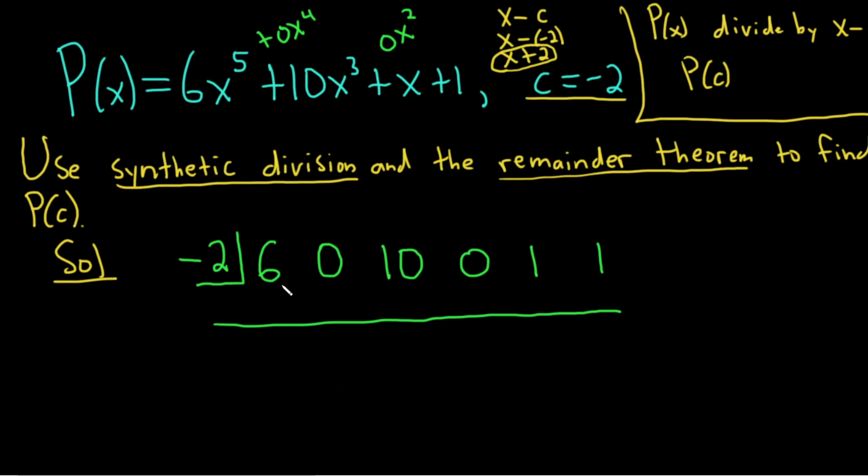And then the first thing you do in the synthetic division process is you take this number and you just bring it down, so 6. And then you start the multiplication process. So you do 6 times negative 2. That's negative 12. And then you add. And you do it again. Negative 12 times negative 2 is 24. And then you add. So 34.